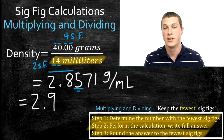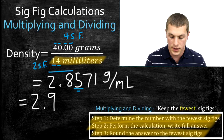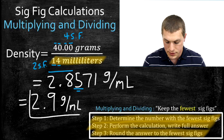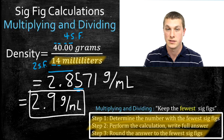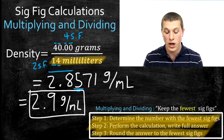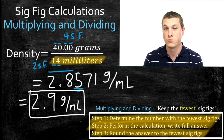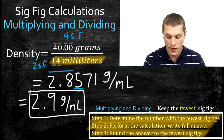Step three: round the answer to the fewest sig figs. Since 14 milliliters had two sig figs, we round our answer to two significant figures. We keep the 2 and round the 8 up to 9 — because the digit right after the 8 is a 5, and standard rounding rules say if the next digit is five or above, round up. So our final answer is 2.9 grams per milliliter.